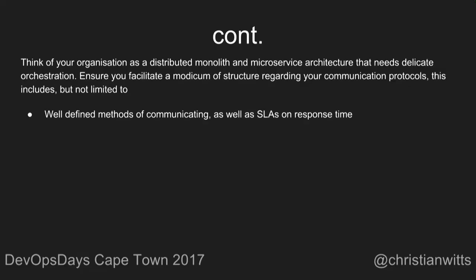Think of your organization as a distributed monolith and microservice architecture all rolled into one that needs delicate orchestration to ensure at least a passable level of communication and rate of work. The monoliths tend to be the old guard — the ones that hold knowledge of every dark corner of your infrastructure and codebase. The microservices tend to be your newly formed teams and squads with razor-sharp focus and tight feedback loops, but you need to define methods of communication and response times required from them.